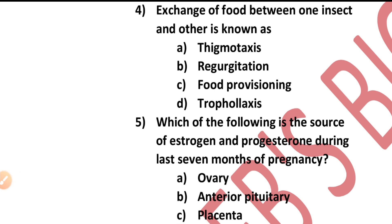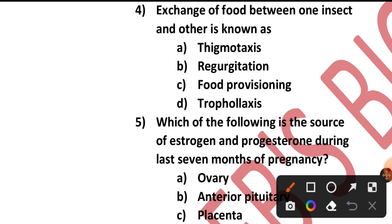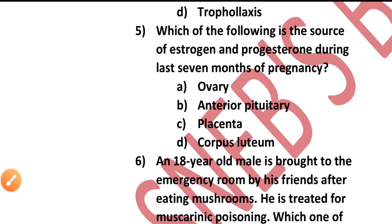Question number four: Exchange of food between one insect and another is known as — thigmotaxis, regurgitation, food provisioning, or trophylaxis? Thigmotaxis is the motion or orientation of an organism in response to touch stimulus. Regurgitation is the action of bringing swallowed food up again to the mouth. Trophylaxis is the mutual exchange of regurgitated liquids between adult social insects or between them and their larvae. So the answer is option D, trophylaxis.